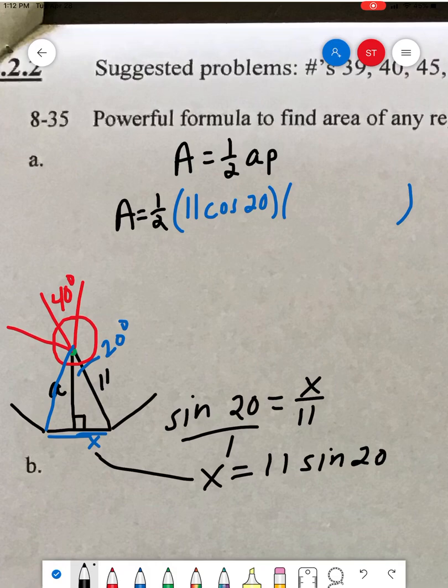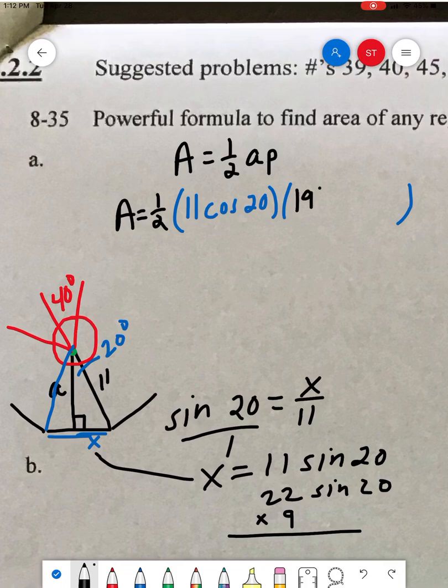But that's the value of x. So you got to double it, which is 22 sine of 20. Remember, don't go doubling that 20. But then you got to multiply by nine, because there's nine sides. So that was 18, 198. So that is my perimeter, 198 sine of 20.